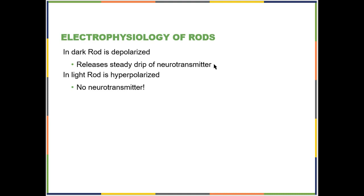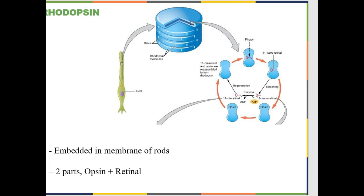When light hits the rod, it causes it to hyperpolarize and it stops releasing neurotransmitter. It's exactly the opposite of how we normally think of neurons — you stimulate it and it stops releasing neurotransmitter. We don't need to get into why it works that way because it would just make the retina even more complicated.